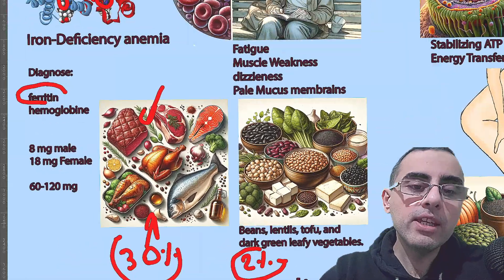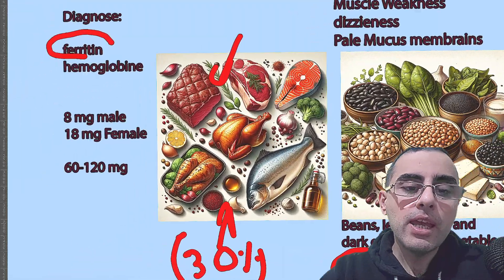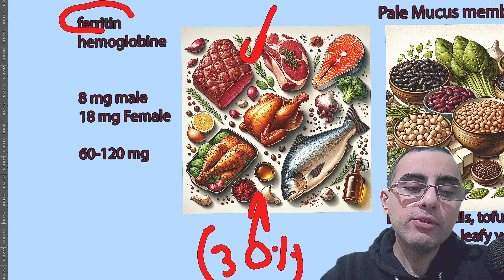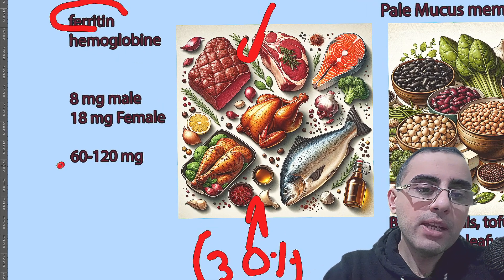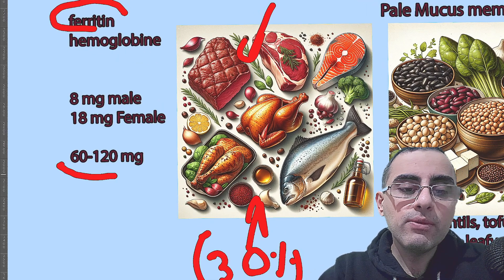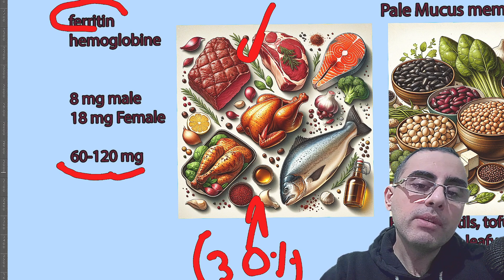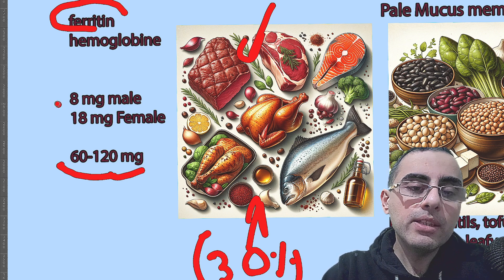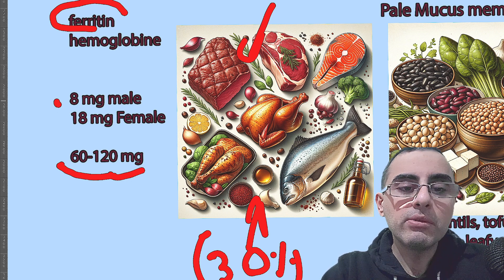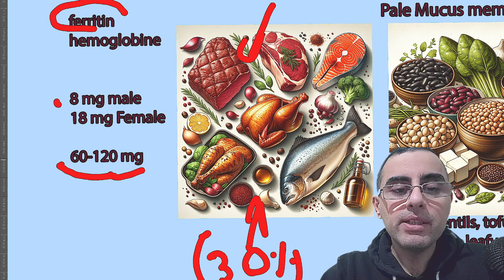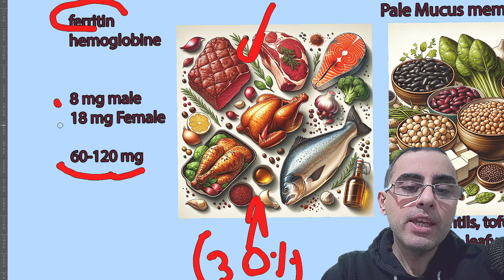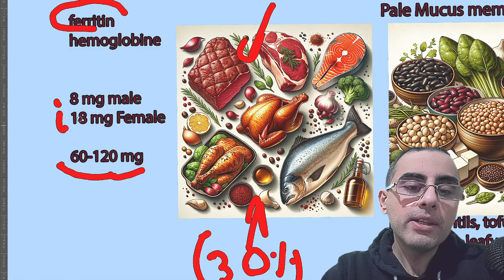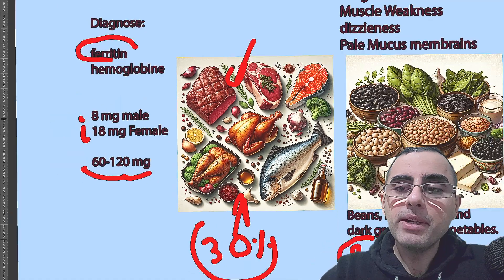Of course, you can take supplements, and usually supplements are prescribed at around 60 to 120 milligrams per day. But in normal cases, adult men require around 8 milligrams of iron per day, and adult women of reproductive age require 18 milligrams per day.